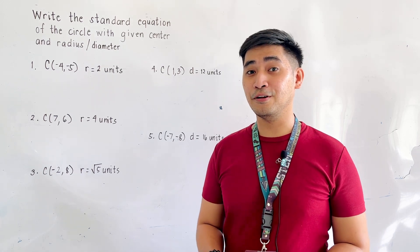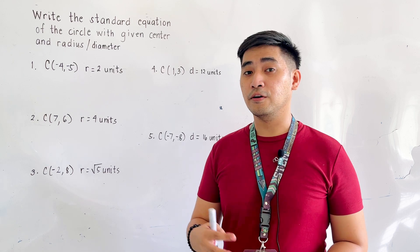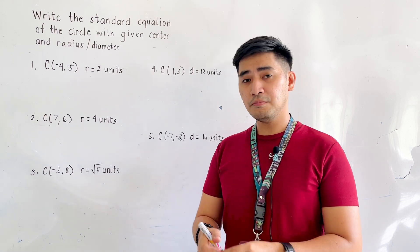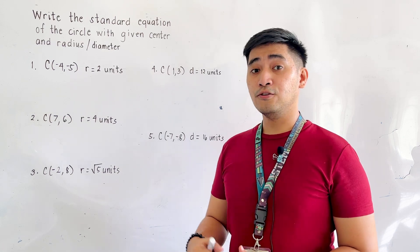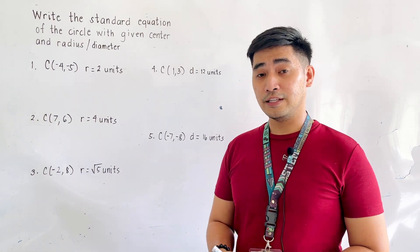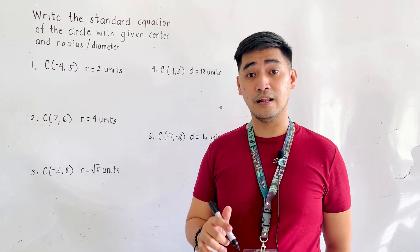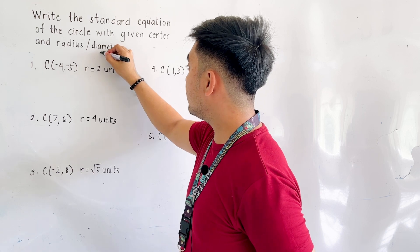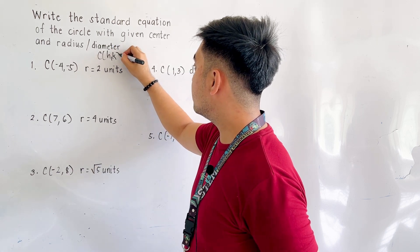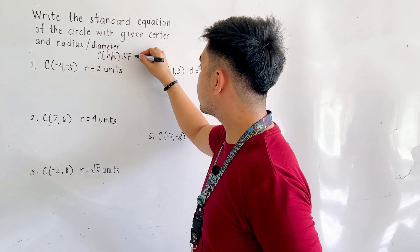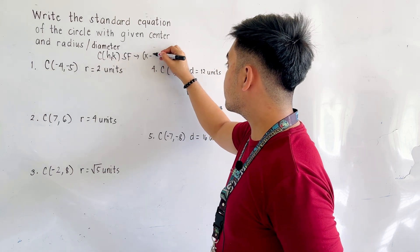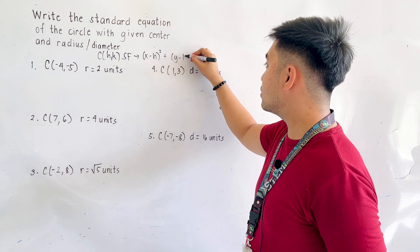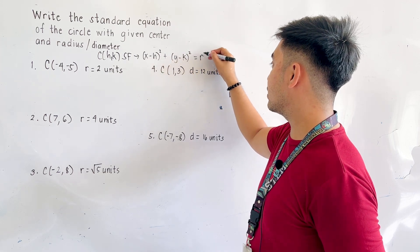So the center is not anymore located at the origin. We are also given a radius or a diameter. Before we try to solve for the equation of the circle, let us first write the standard equation of the circle with center located at (h, k). The standard form becomes: x minus h, quantity squared, plus y minus k, quantity squared, is equal to r squared.